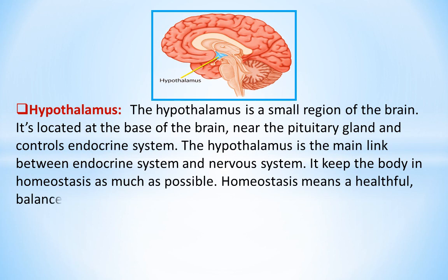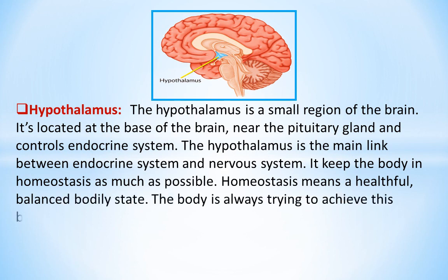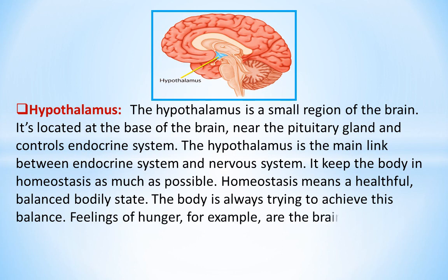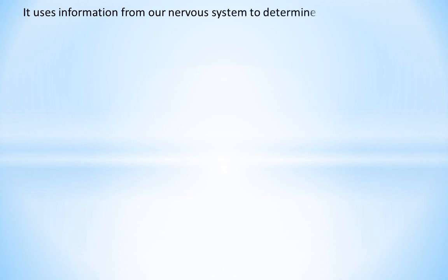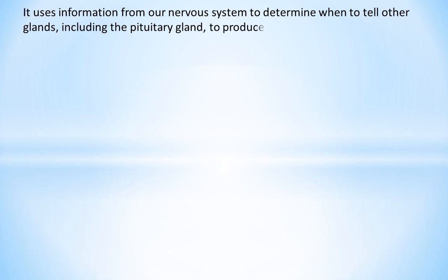It keeps the body in homeostasis as much as possible. Homeostasis means a healthful, balanced bodily state. Feelings of hunger, for example, are the brain's ways of letting its owner know that they need more nutrients to achieve homeostasis. It uses information from our nervous system to determine when to tell other glands, including the pituitary gland, to produce hormones.